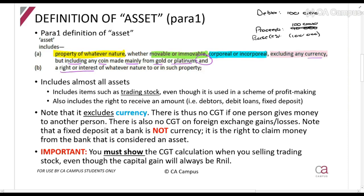If I've got a fixed deposit in a bank, it's also not currency - it's the right to claim money. If you've got the right to claim money, it's an asset. Something like forex gains or losses is still considered currency, not an asset, because it's not a right to receive - it's basically a loss you've made. Forex and actual notes and coins are excluded, but the right to receive those amounts will be included.